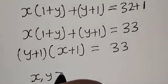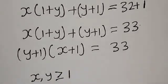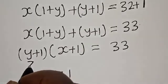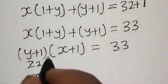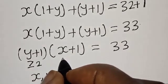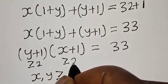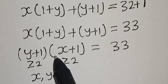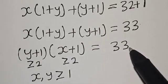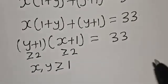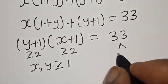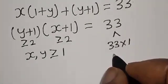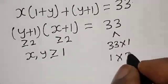Since x and y are greater than or equal to 1, that means y plus 1 is greater than or equal to 2, and x plus 1 is greater than or equal to 2. So we have the product y plus 1 multiplied by x plus 1 equal to 33. Now 33 can be rewritten as 33 times 1, or 1 times 33, or 3 times 11, or 11 times 3.